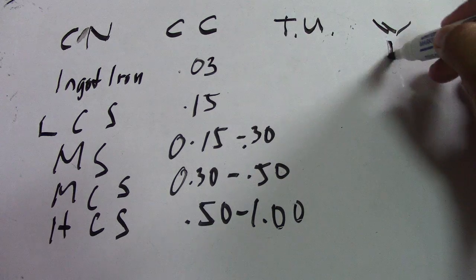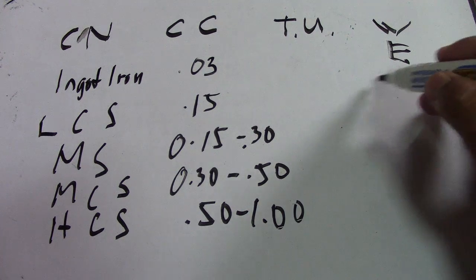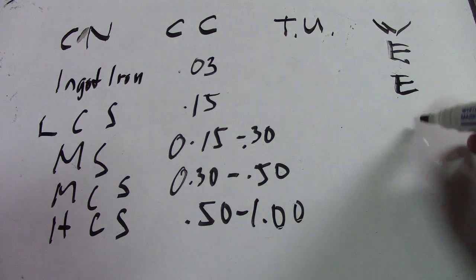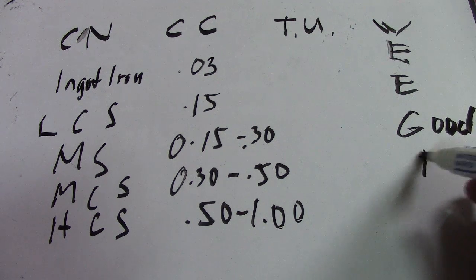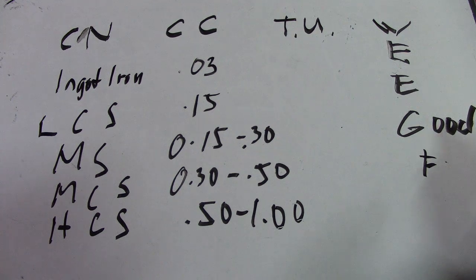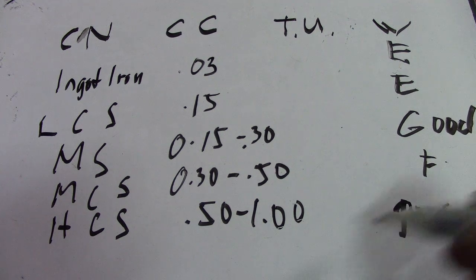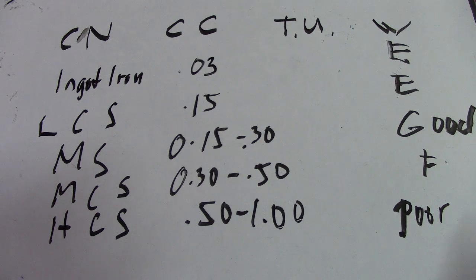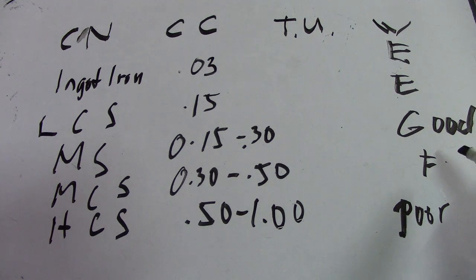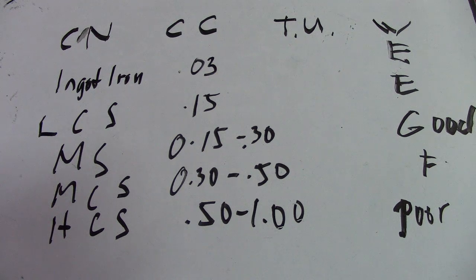For weldability: ingot iron is excellent. Low carbon steel is excellent. Mild steel is good. Medium carbon steel is fair and requires preheat. High carbon steel is difficult to weld without adequate preheat or post-heat treatment.